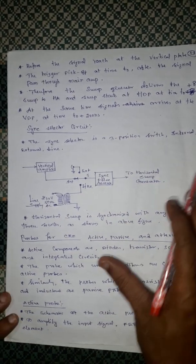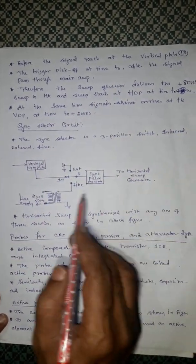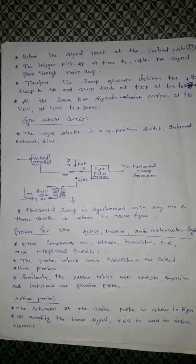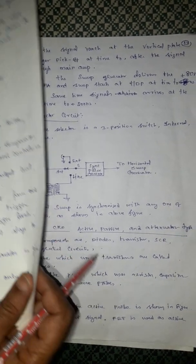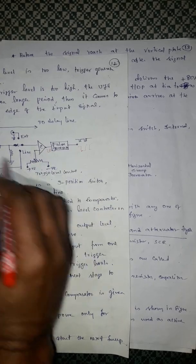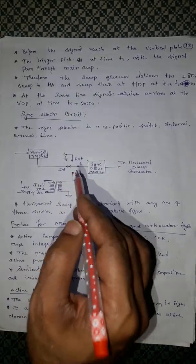Synchronous selector switch - it's a very simple topic, simple self-explanatory. Already we see this in previous topic also. Here in the sweep trigger pulse, two modes are there. For that, we are having a selector switch.